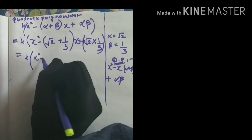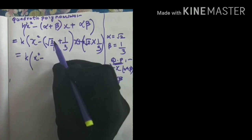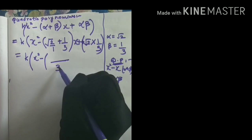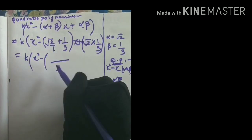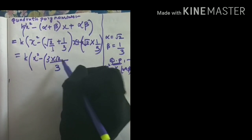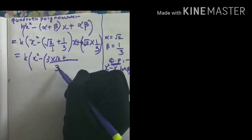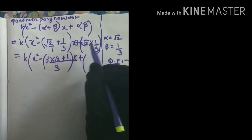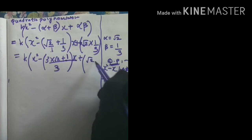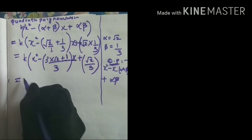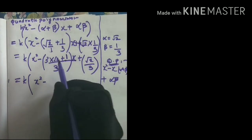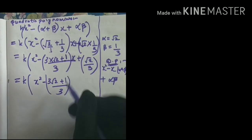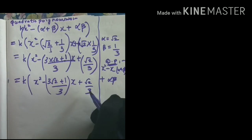Now finding the LCM: root 2 can be written as root 2 by 1, and the LCM of 3 and 1 is 3. To compute: 3 divided by 1 is 3, multiplied by numerator root 2 gives 3 root 2; then 3 divided by 3 is 1, multiplied by 1 gives 1. So alpha plus beta equals (3 root 2 plus 1) by 3. And alpha times beta equals root 2 times 1 by 3, which is root 2 by 3.